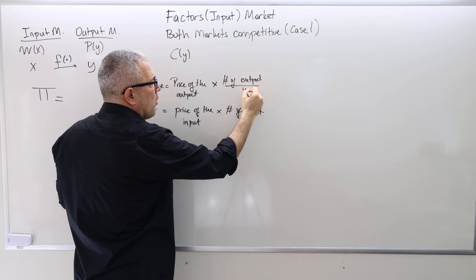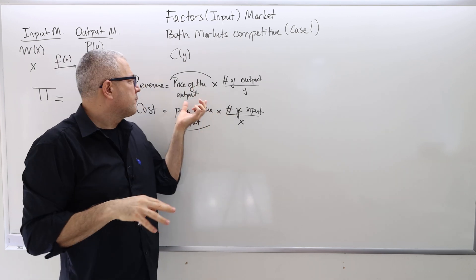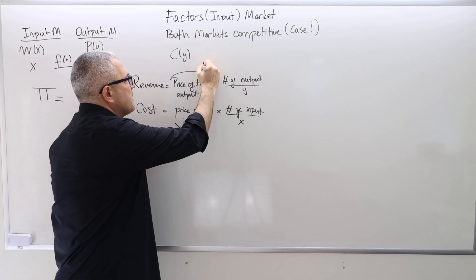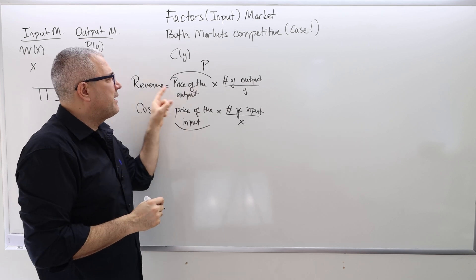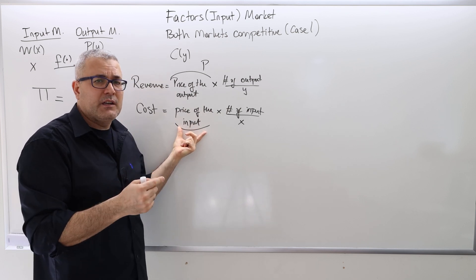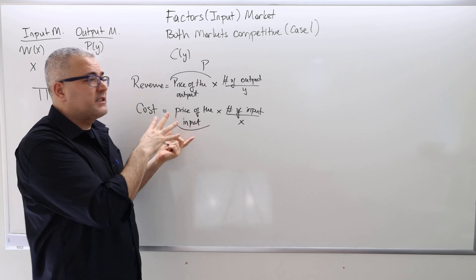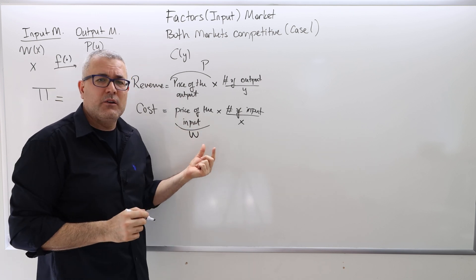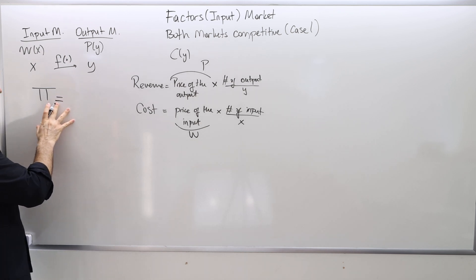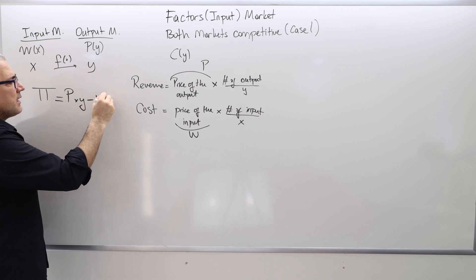The number of outputs is Y and the number of inputs is X. The price of the output — if it were a monopolist, it would be the demand curve P(Y). But here, because it's a competitive firm, it's going to be just P, a fixed number. The price of the input — if it were a monopsonist, the only buyer, it would be the supply curve W(X). But because the firm is competitive, it takes the price as given, denoted as W. So the firm cannot change or choose the price.